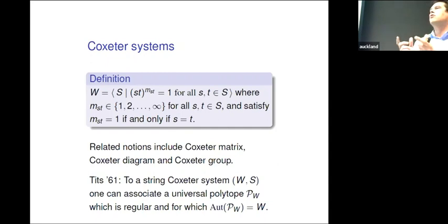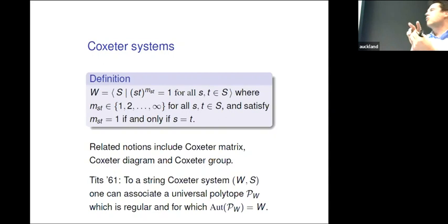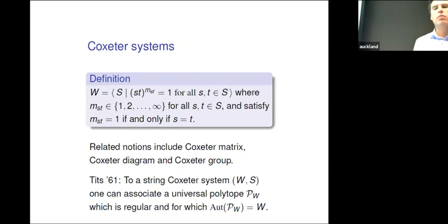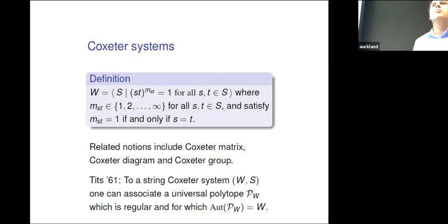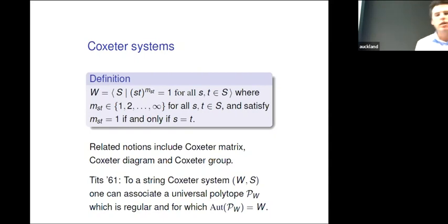There is some abstract polytope that does this, and the group acts nicely on this polytope. That's the transition between the group theory and the polytopes.